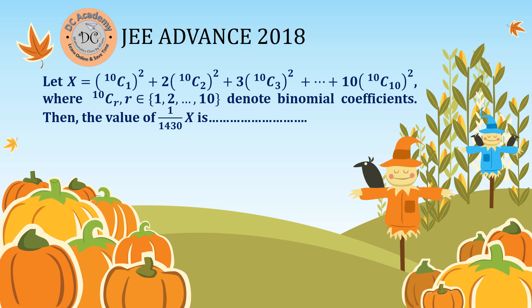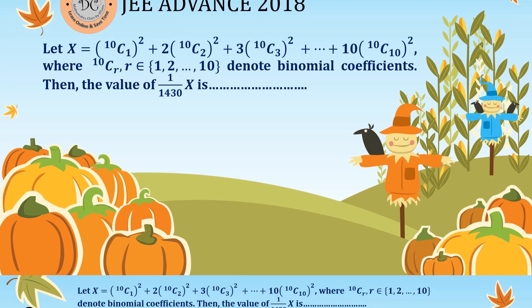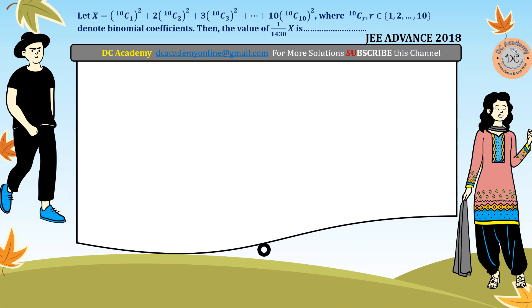In this video we're going to solve a problem which appeared in JEE Advanced 2018. Here x is given as a sum of a series in nCr form — 10C1, 10C2 squared, and so on — where index variables 2, 3, through 10 are multiplied. We need to find the value of x.